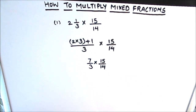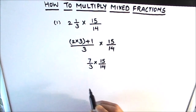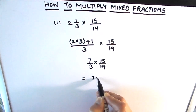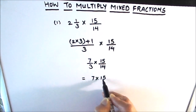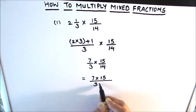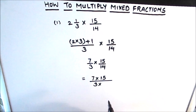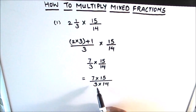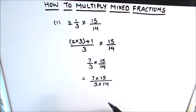Now we have two improper fractions being multiplied. When we multiply fractions, the numerator of one fraction gets multiplied with the numerator of the other fraction, and the denominator of one fraction gets multiplied with the denominator of the other fraction. So that's going to be 7 times 15, divided by 3 times 14.